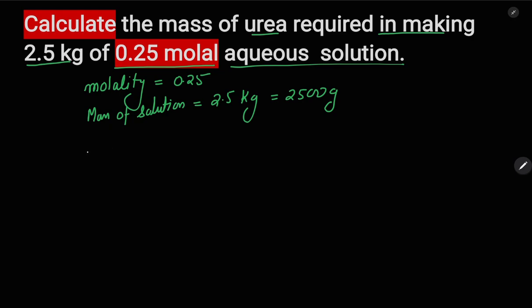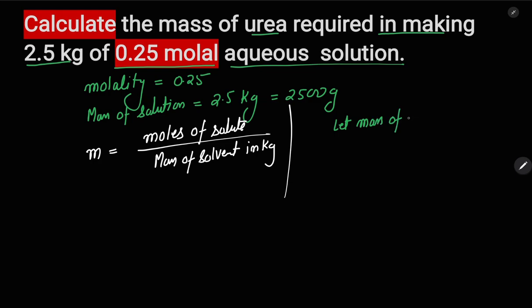The formula of molality is number of moles of solute divided by mass of solvent in kg. For solving this question, let us assume the number of moles of urea are x.